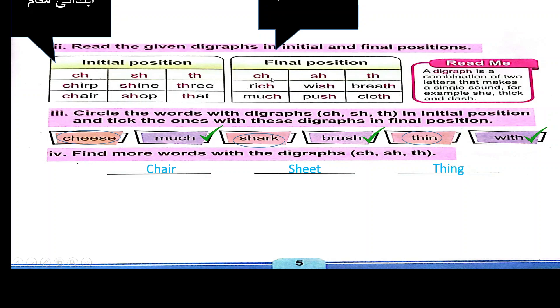Final position: CH - rich, much; SH - wish, push; TH - read, clot.